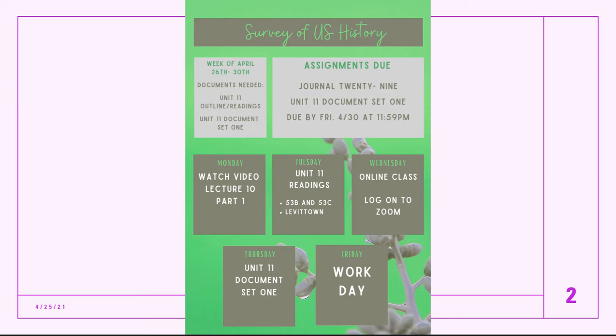Let's start with your weekly outline. This week is a light week — we have Journal 29, there are three readings listed, and your other assignment is Unit 11 Document Set One. This document set is on the United States post-World War II fear. We covered McCarthyism at the end of the last unit, but now I want you to look at the societal half of the Red Scare. All of that is due by Friday at 11:59.